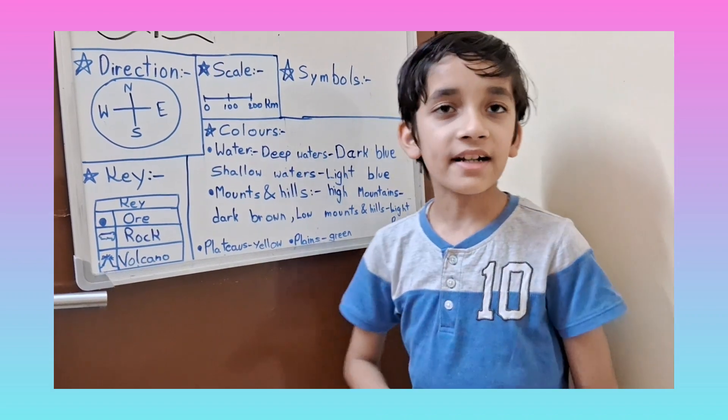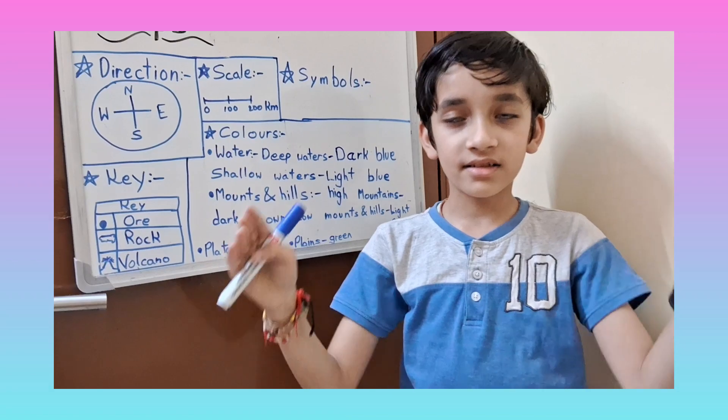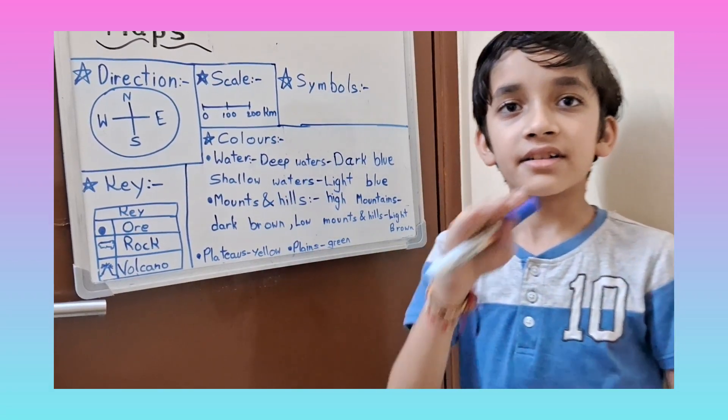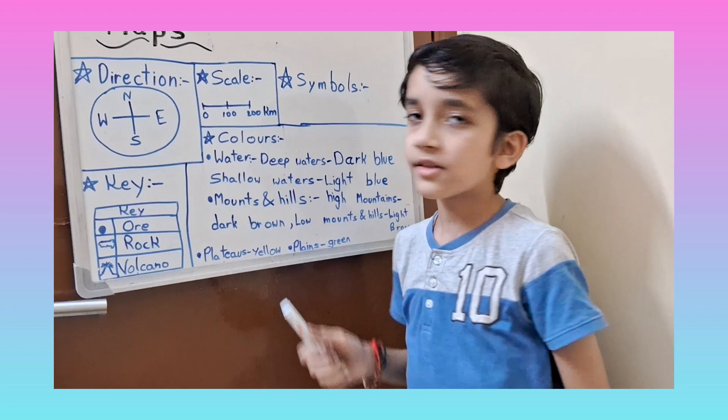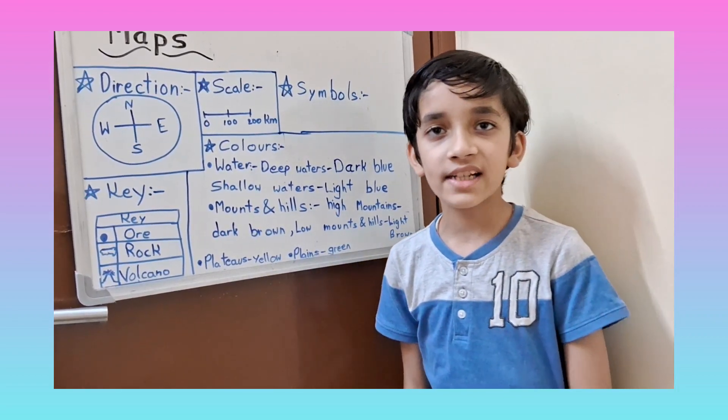The plateaus are like a table with slope-like sides and a flat top. They are shown in yellow, and plains are shown in green.